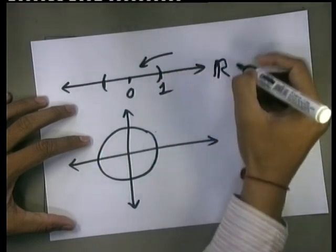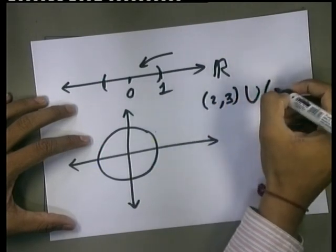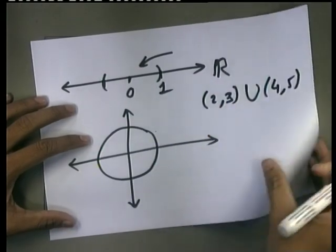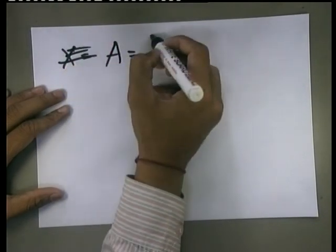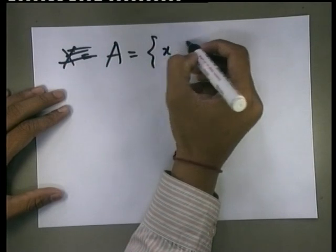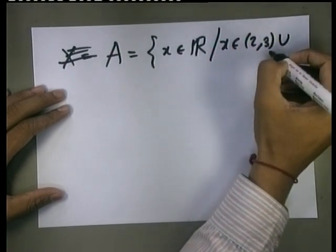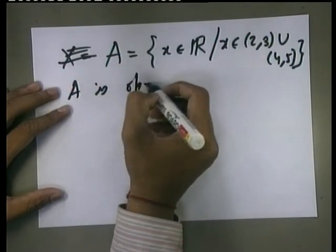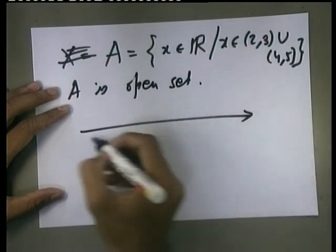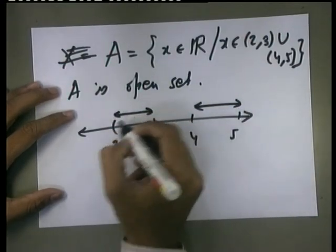In R, if I consider this particular set: union of open interval (2,3) union (4,5). Then in that case, if we realize the picture of this particular set, the set is all x belonging to R such that x belongs to (2,3) union (4,5). Then this A is an open set.